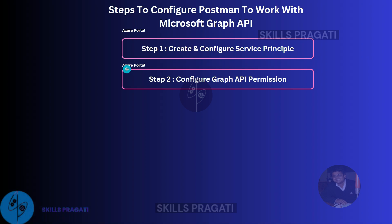Step 2: Configure Graph API permission. This step involves configuring the permissions your application needs to access the Microsoft Graph API. You can set delegated permissions or application permissions. Delegated permissions are used when a user signs into your application and consents to the permissions you request. Application permissions are used when your application needs to access data on behalf of itself without a user signing in.